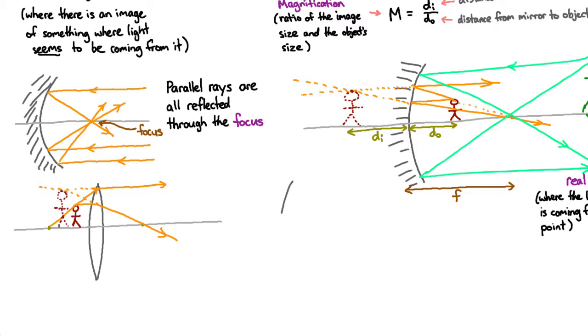Alternatively, if you have someone standing outside the focus, you get a different kind of image, but you work it out the same way. Parallel rays go through the focus, and rays that go through the focus come out parallel. Here you can see that the light rays really seem to be coming from this point. So that's where the top of the head image is, and that is a real image, and an inverted one.